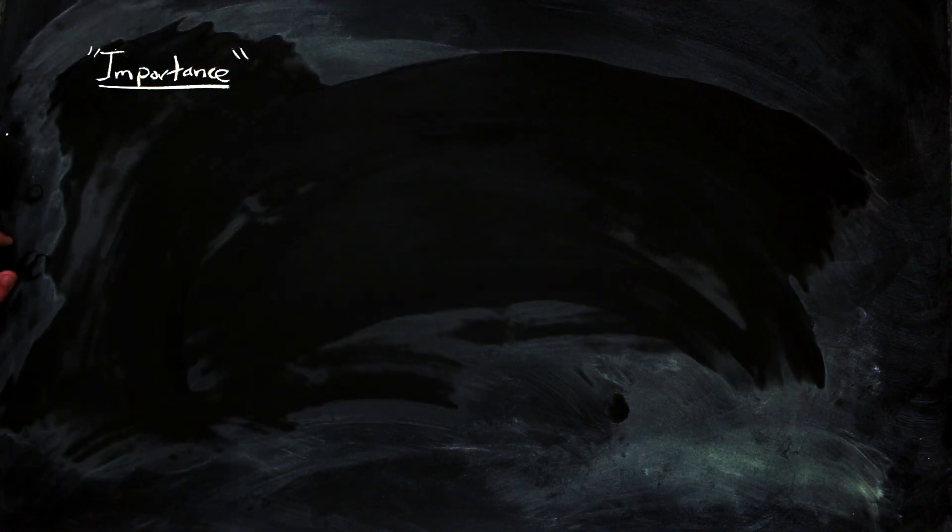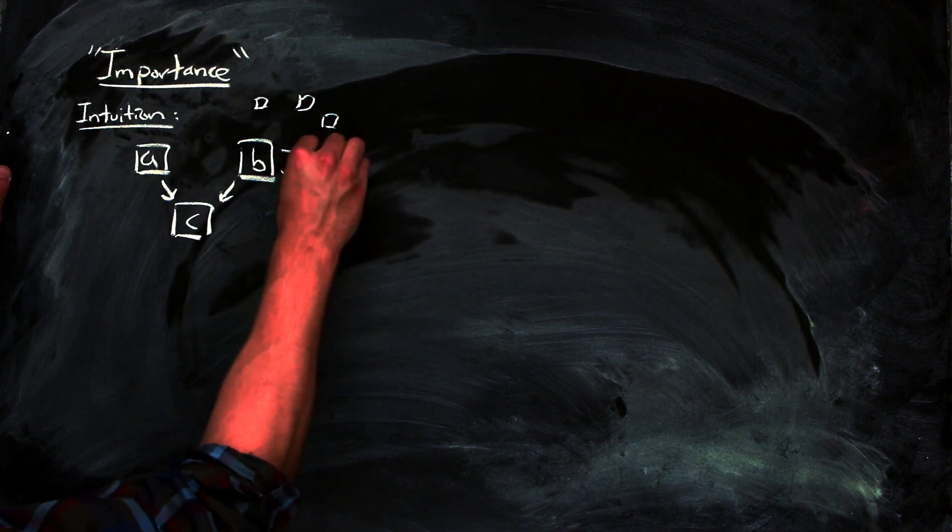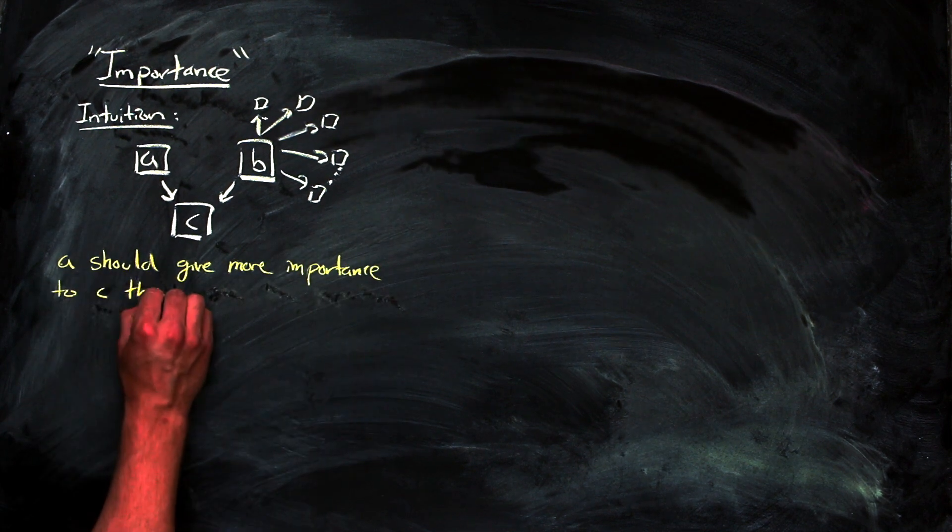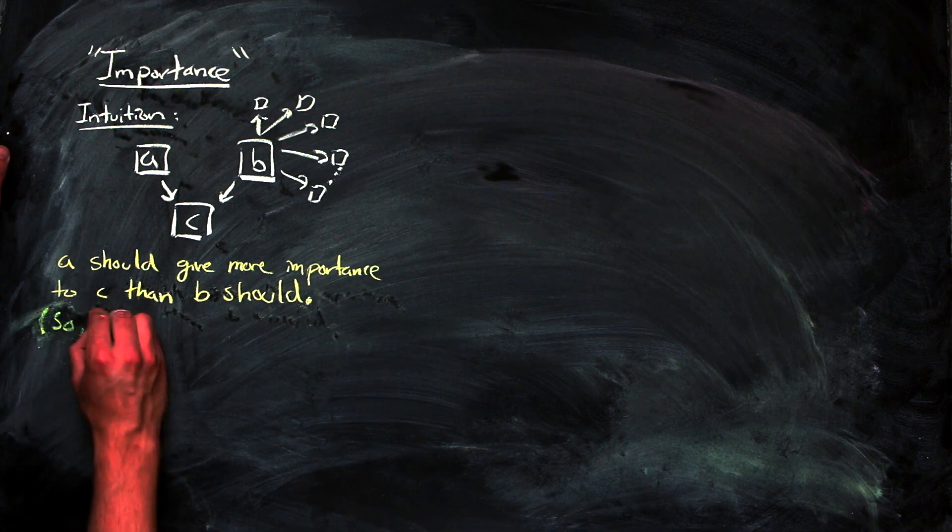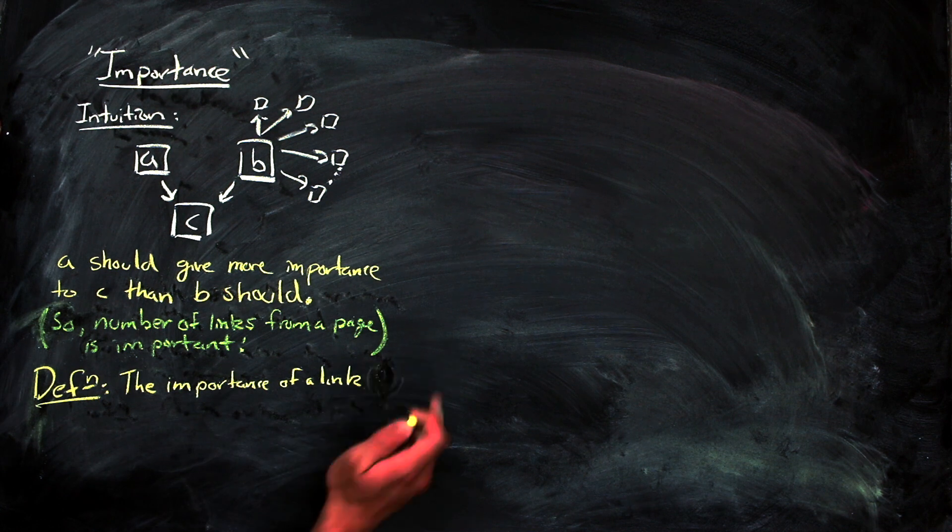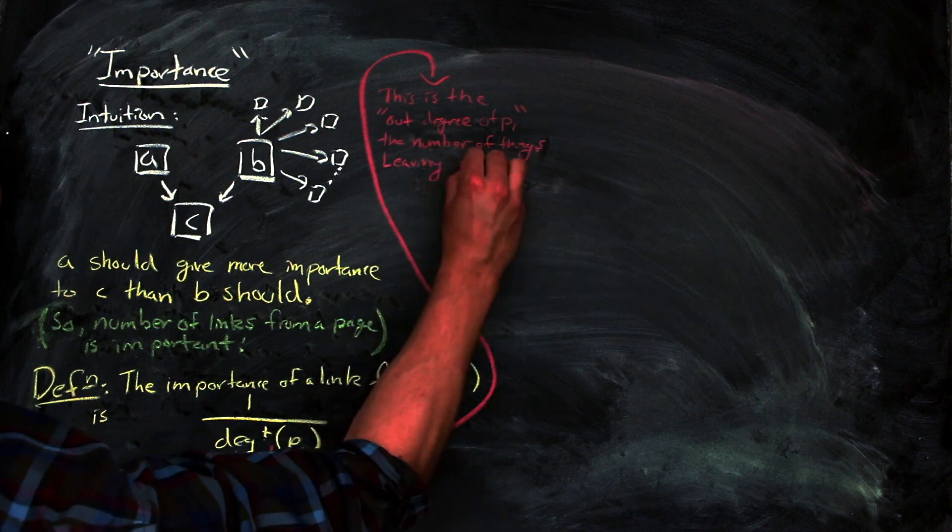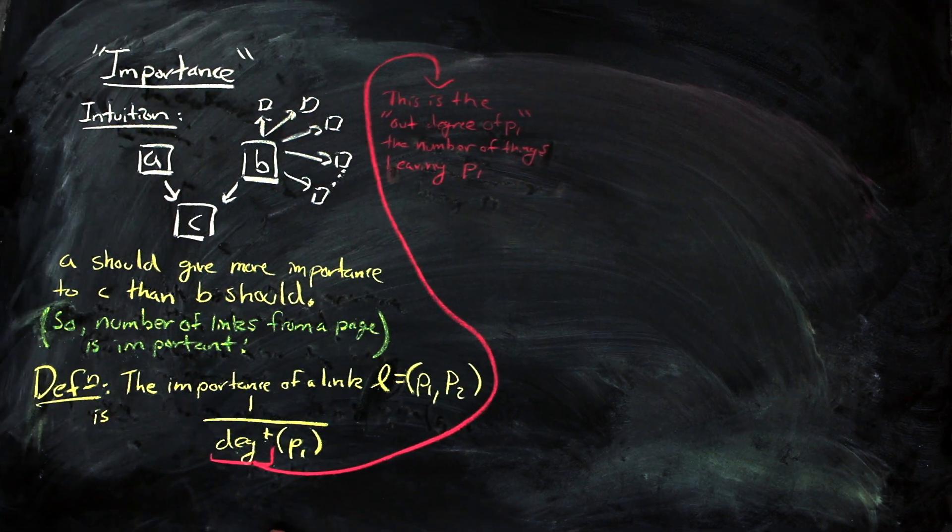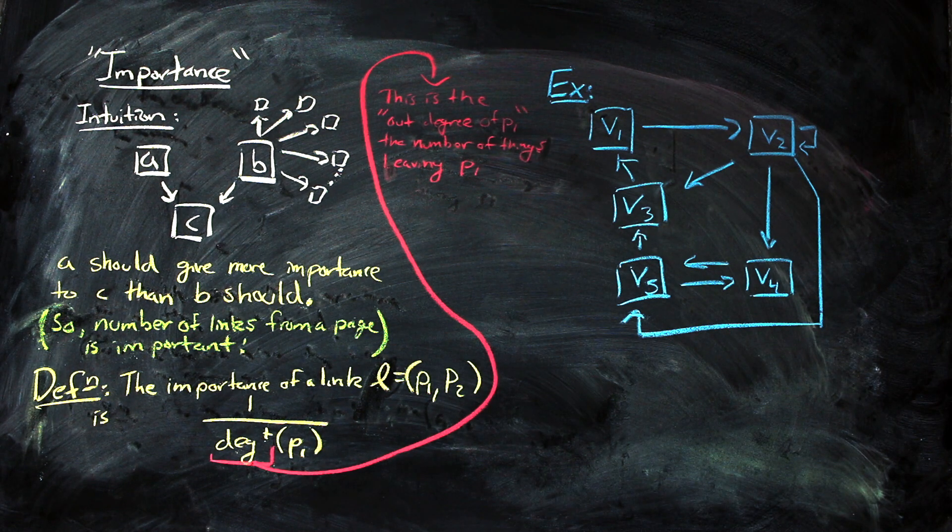Next, we need to define the importance of a page. Recall that importance of a page is dependent on the pages that link to it. The intuition here will help motivate the definition. First off, if two pages, A and B, link to a third page, C, but B links to a ton of other pages, then we want A to give more importance to C than B does. The importance, then, should be associated with the link and not the initial page, but it's dependent on the initial page of a link. And so we can define the importance of a link as 1 over the out degree of its initial page, where the out degree of a page, or vertex, is the number of edges that have that page as an initial vertex. So in this graph, or internet, of five pages with these links, we can label each link with its corresponding importance, like so.